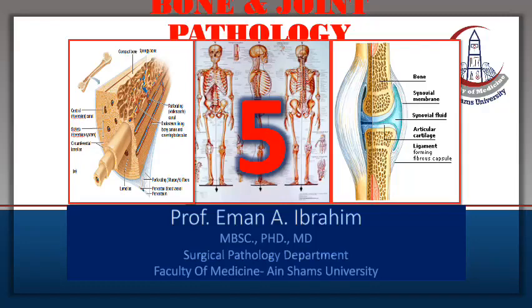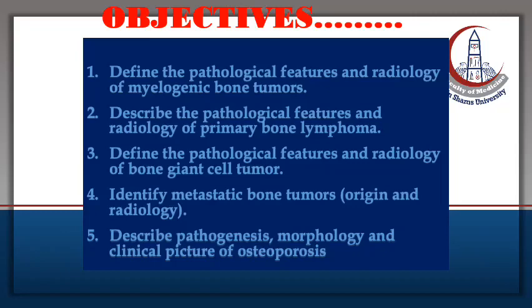Good morning. This is our fifth lecture in bone and joint pathology. In this lecture we will identify the pathological features and radiology of various bone tumors including myelogenic tumor, lymphoma, giant cell tumor, and metastatic bone tumors. We will also study the pathogenesis, morphology, and clinical features of osteoporosis.